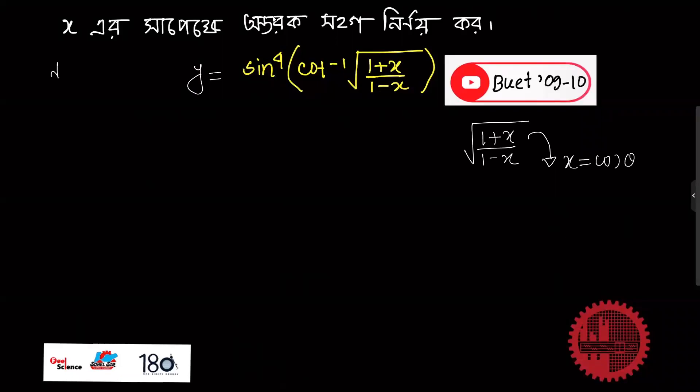We will have to find dy by dx. I'll simplify the first y to the power 4.